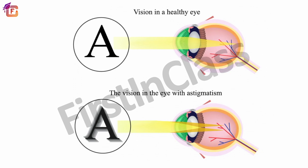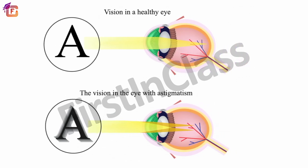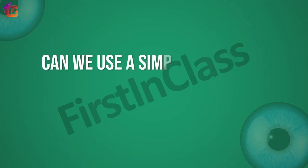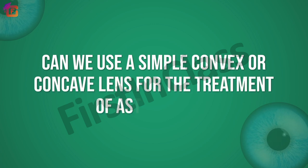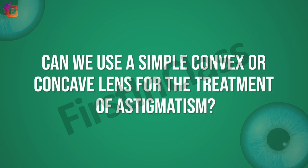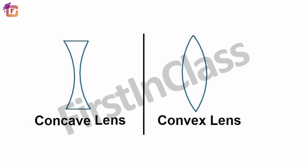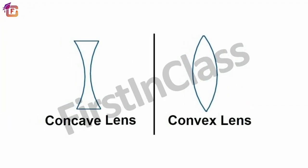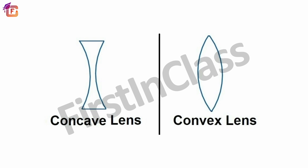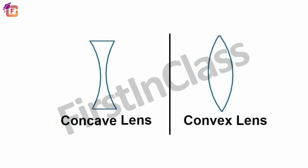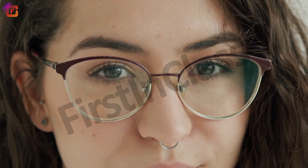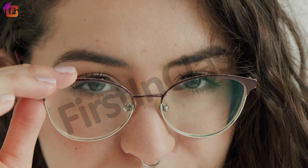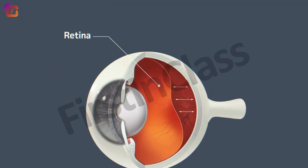So can we use a simple convex or concave lens for the treatment of astigmatism? No, we cannot. Convex or concave lenses cannot work here, as they can only either converge or diverge the light rays. We need a lens which can focus the light rays on the retina in accordance with the deformed shape of the cornea.